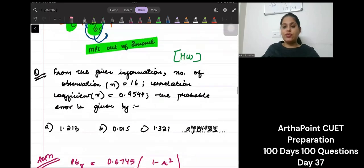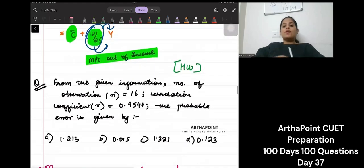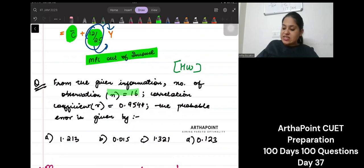Okay, let us have a homework question for you. From the given information, number of observations is 16, correlation coefficient is 0.9544. What is the probable error?